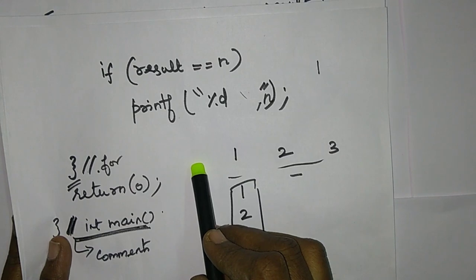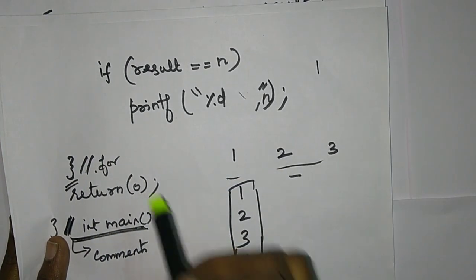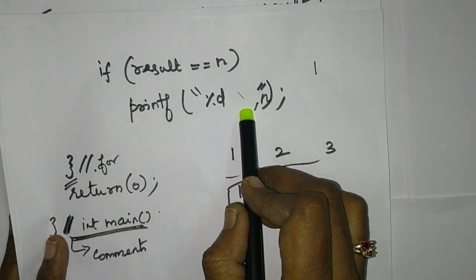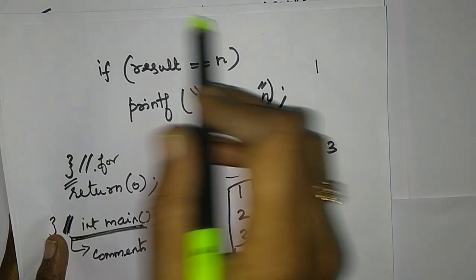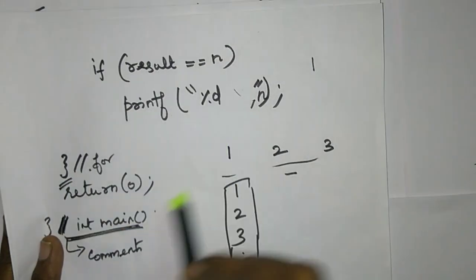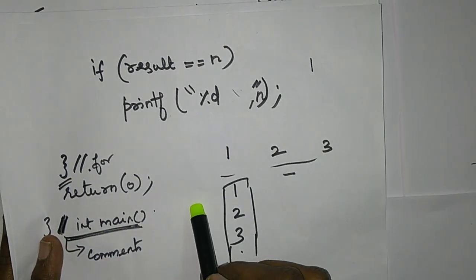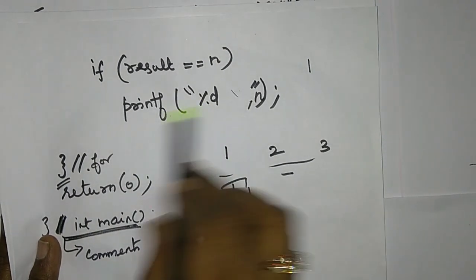N equal to 3. I print 2 is the Armstrong number. 3, 1000, your Armstrong number.